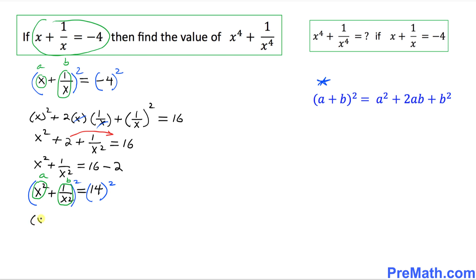So that's going to become x square and then square, plus 2 times x square times 1 over x square, plus 1 over x square and then square, equals to on the right hand side 14 squared, which is 196.